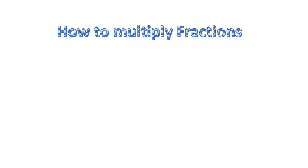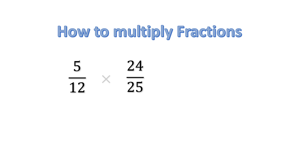How to multiply fractions? We have two fractions 5 over 12 and 24 over 25, and we have to multiply both of them.